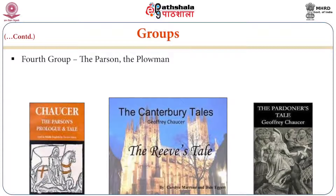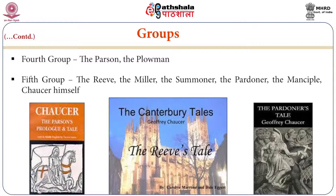The fourth group: the Parson and the Plowman. The fifth group: the Reeve, the Miller, the Summoner, the Pardoner, the Manciple, and Chaucer himself. In these groups, we can easily understand the wide varieties and ranges of characters Chaucer has dealt with.